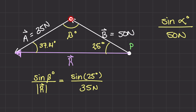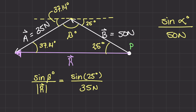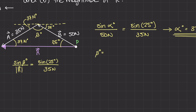We know that if this angle is 25 degrees and these two horizontal lines are parallel, then this corresponding angle is also 25 degrees. And the other side gives us our alpha angle, 37.14 degrees. So beta is going to be equal to 180 degrees minus 25 degrees minus 37.14 degrees. Doing the math, beta equals about 117.86 degrees. That gave us the beta value we needed.